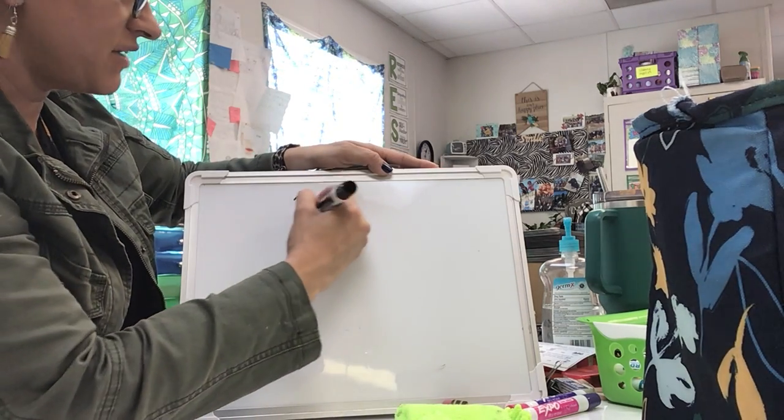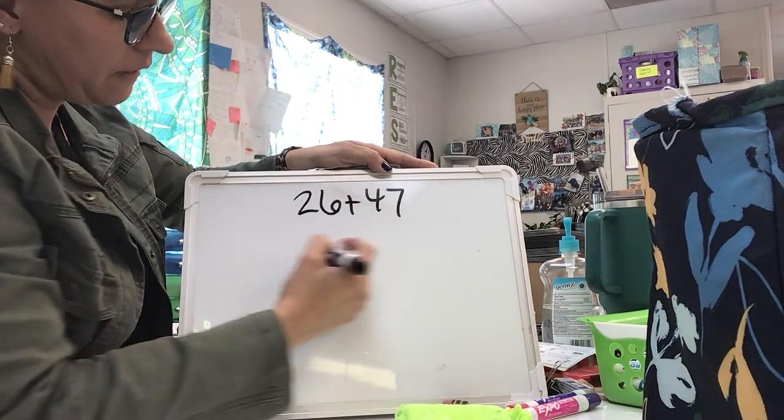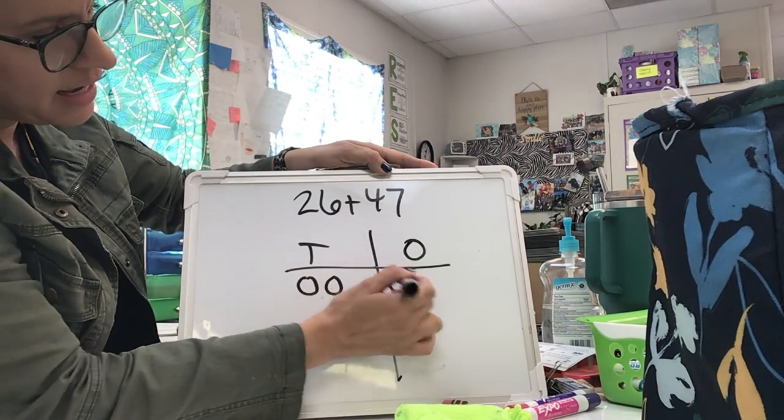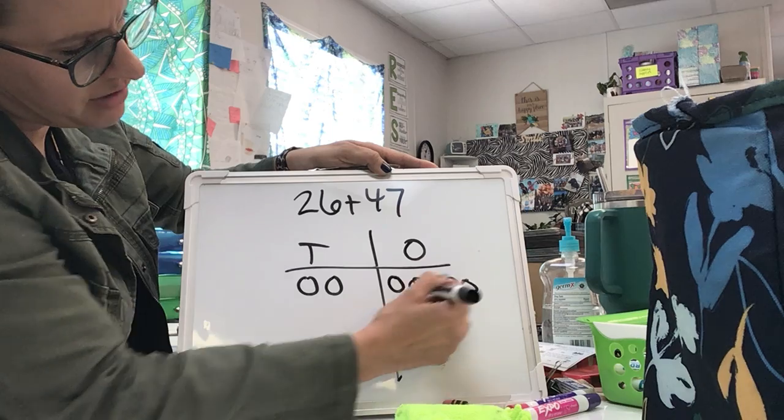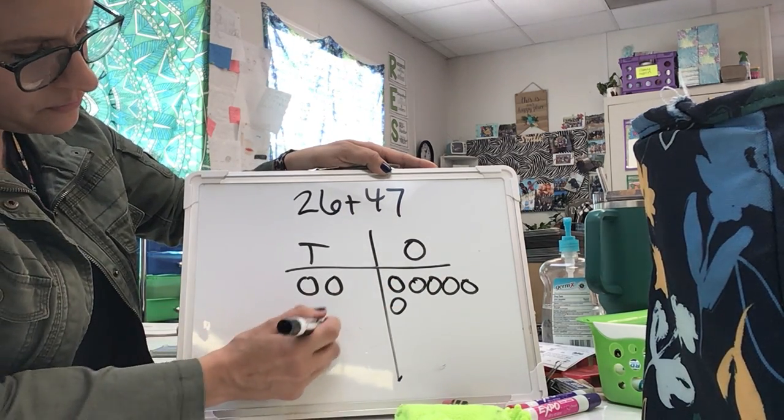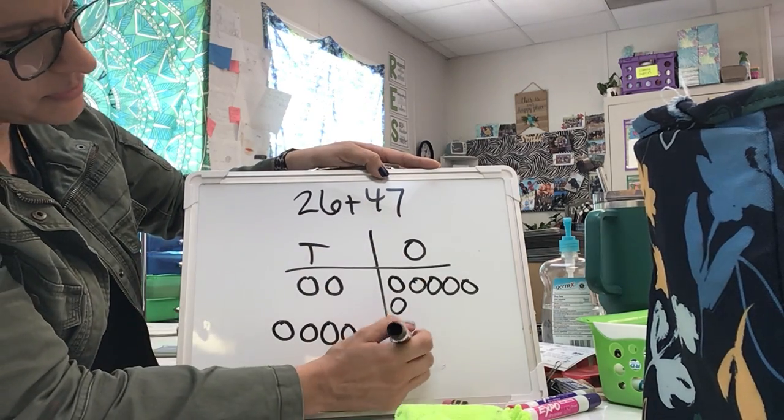26 plus 47. Here's my tens. Here's my ones. 26 has 2 tens, and 1, 2, 3, 4, 5, 6 in my ones. 47 has 4 in my tens place, and 7 in the ones place.